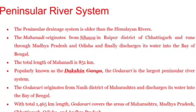The total length of the Mahanadi river is 851 kilometers, and it discharges its water into the Bay of Bengal. The river Godavari is popularly known as Dakshina Ganga. It is the largest peninsular river and the second largest river in India, with a total length of 1,465 kilometers.